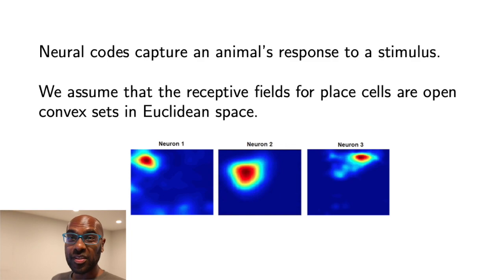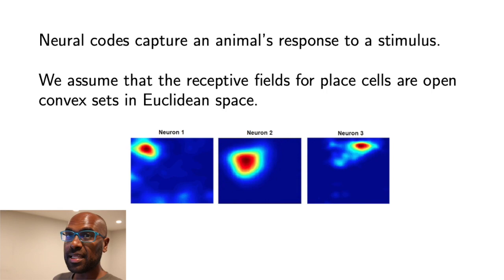Now believe it or not, this question is actually motivated by something in science. It turns out that these different regions correspond to stimuli that happen in an animal's brain, particularly in terms of what's happening with their neural firing patterns. It turns out that these neurons fire in regions in a space that look kind of like these blobs, so they're approximated by circles.